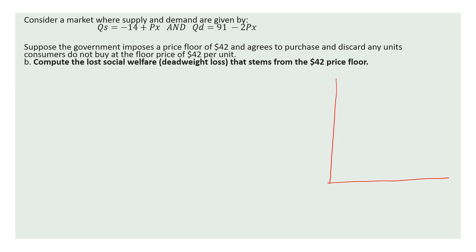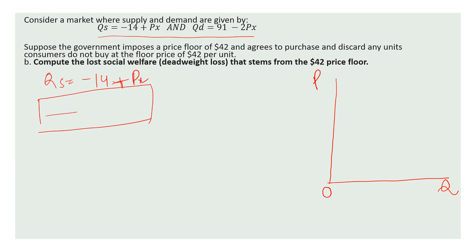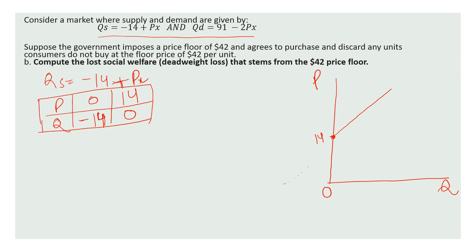Here we have quantity on the x-axis and price on the y-axis. Now I will draw the demand and supply curves according to the equations. For the supply function QS = -14 + PX: if price equals 0, quantity is -14; if quantity equals 0, price equals 14. So the supply curve starts at price 14 on the price axis and slopes upward.